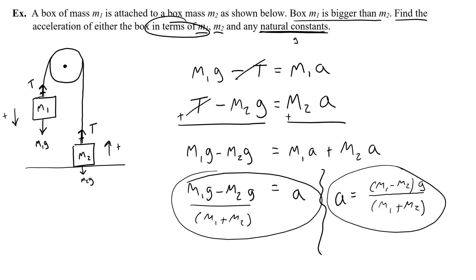This is what the AP test wants when it uses the phrase in terms of. That means find an equation with these things on the right hand side. So we found the acceleration. We are super smart.